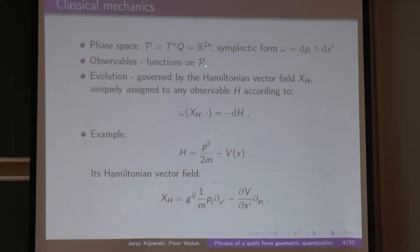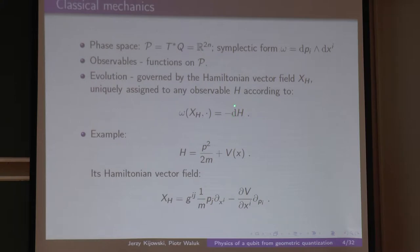Evolution is governed by a Hamiltonian vector field. Whenever you have a Hamiltonian, there is a unique way to assign a vector field to it: you take the differential of H — it is a co-vector field — and you apply omega to the minus one. The physical convention is that the minus sign is here.